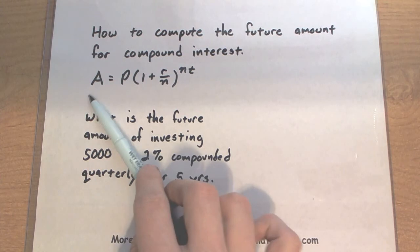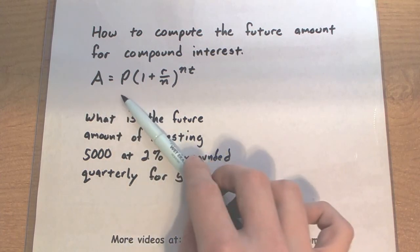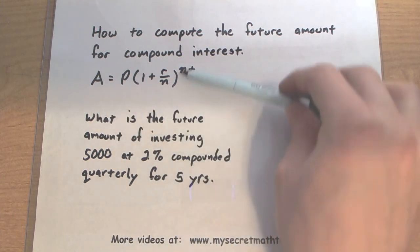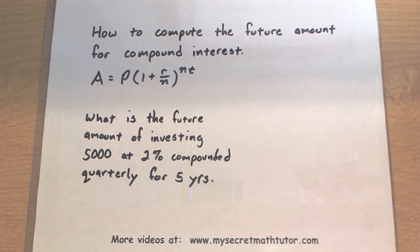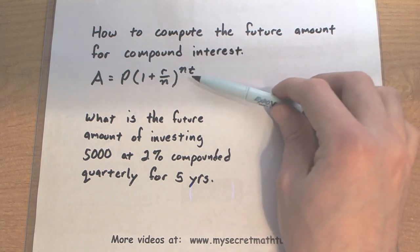This says the future amount A is equal to P, the principal, times 1 plus R, the rate, divided by N, where N is the number of times it is compounded per year, and then this is raised to a power of N times T.